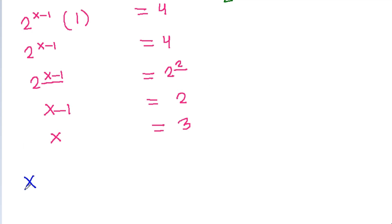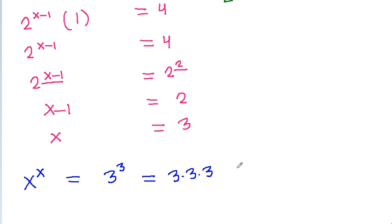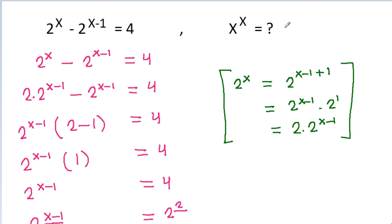So x power x will be equal to 3 power 3, and 3 power 3 is 3 times 3 times 3. And 3 times 3 is 9, times 3 is 27. So it is equal to 27.